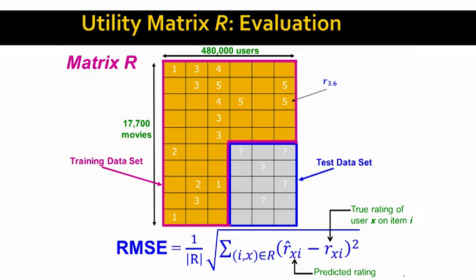We can use the historical rating data to build our model — this is what we call the training data. Then, using this trained model, we want to predict how much users will like movies they haven't yet seen, which we call the test data. The way we quantify how accurate our prediction is, we use what is called the root mean squared error (RMSE).